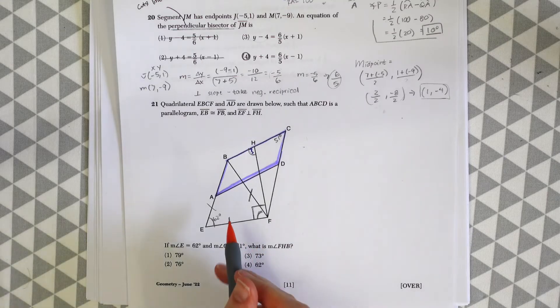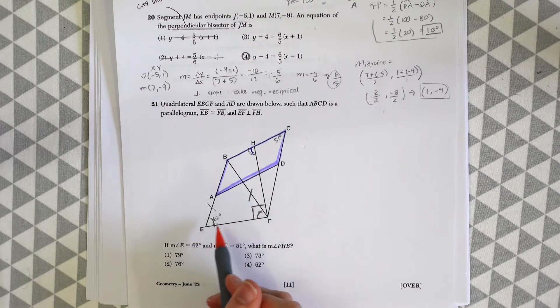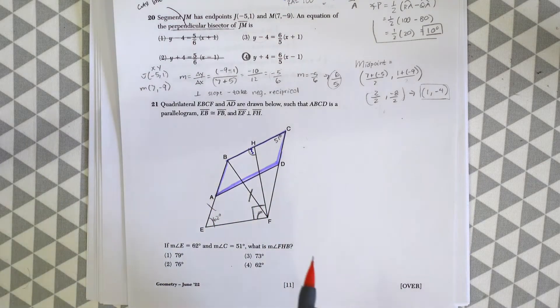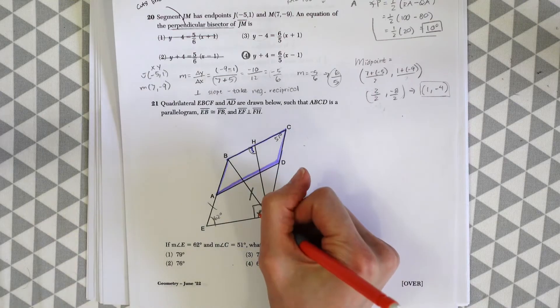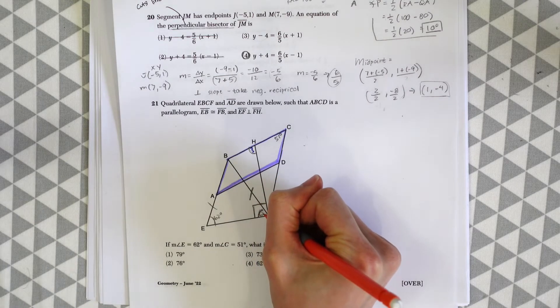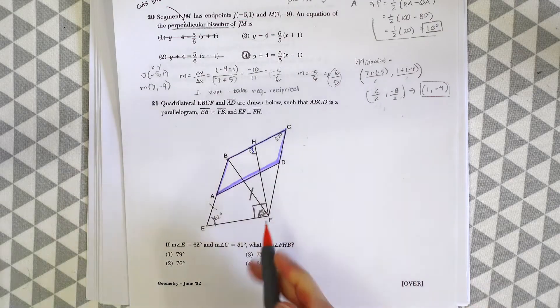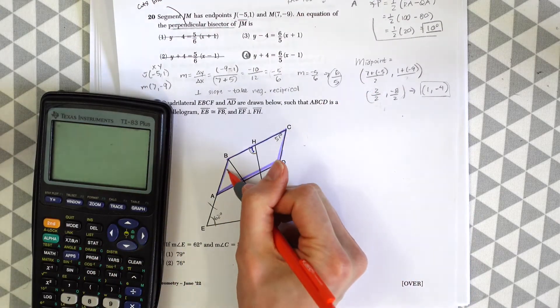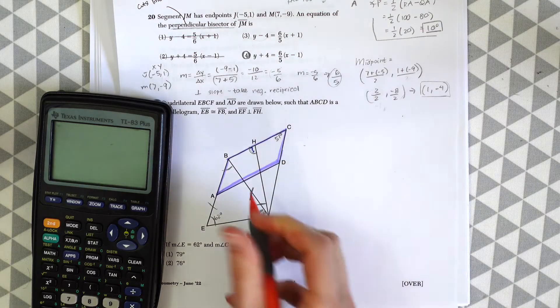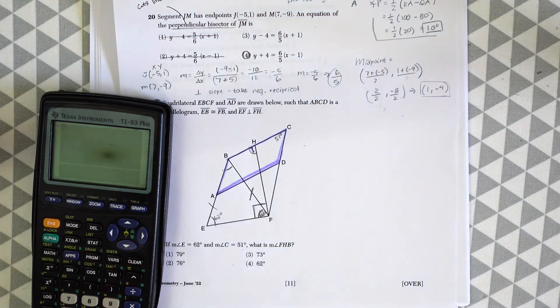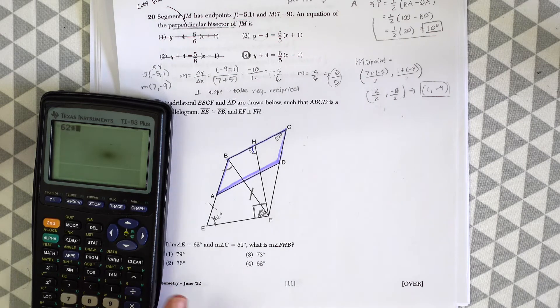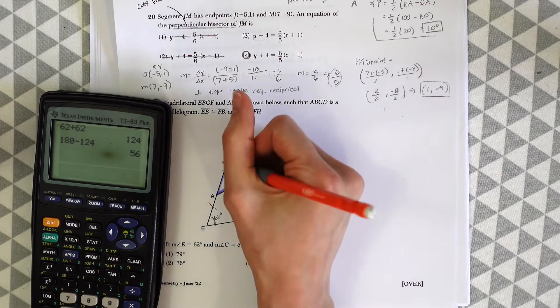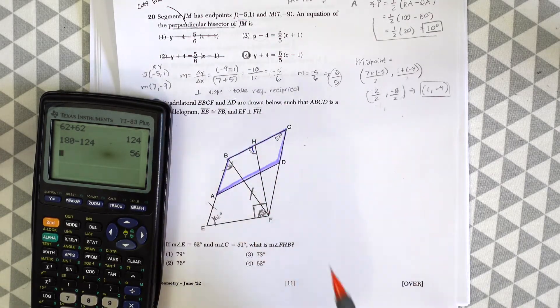Let's start with the isosceles triangle. They told us EB is congruent to FB, and we have this angle value of 62 degrees, so this is also 62 degrees. All angles in a triangle add up to 180 degrees. 62 plus 62 is 124, and 180 minus 124 is 56. So we have 56 degrees here.